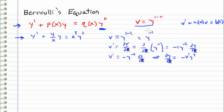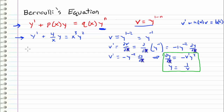We can solve for dy/dt, because that's how we'll reparameterize: dy/dt equals negative v prime times y squared. And since v equals y to the negative 1, we can solve for y to get y equals 1/v. We'll use these two expressions to substitute into the original differential equation. So y prime (dy/dt) is negative v prime times y squared, plus 4/x times y, which is 1/v, and that equals x cubed times 1/v squared (i.e., y squared).